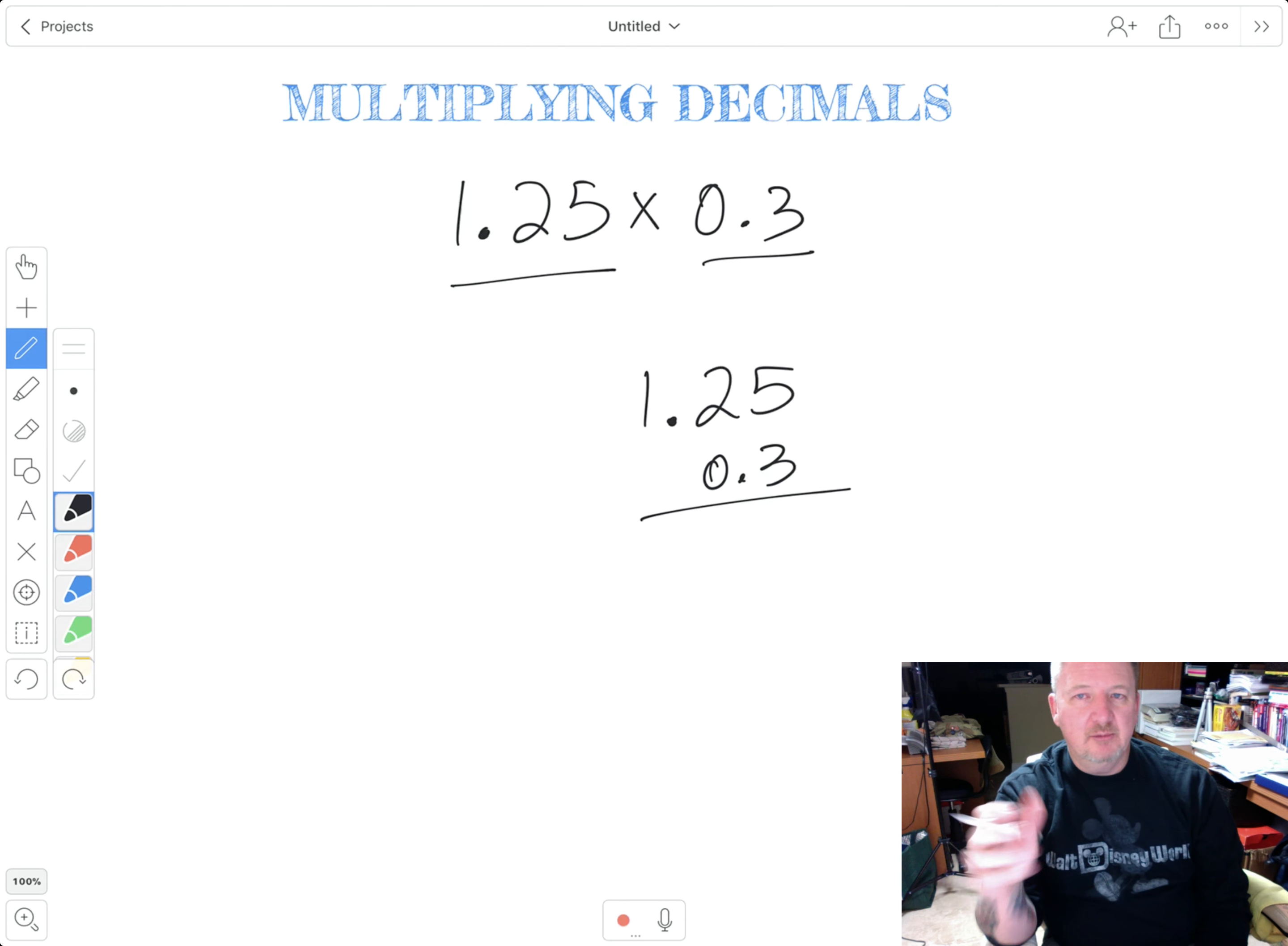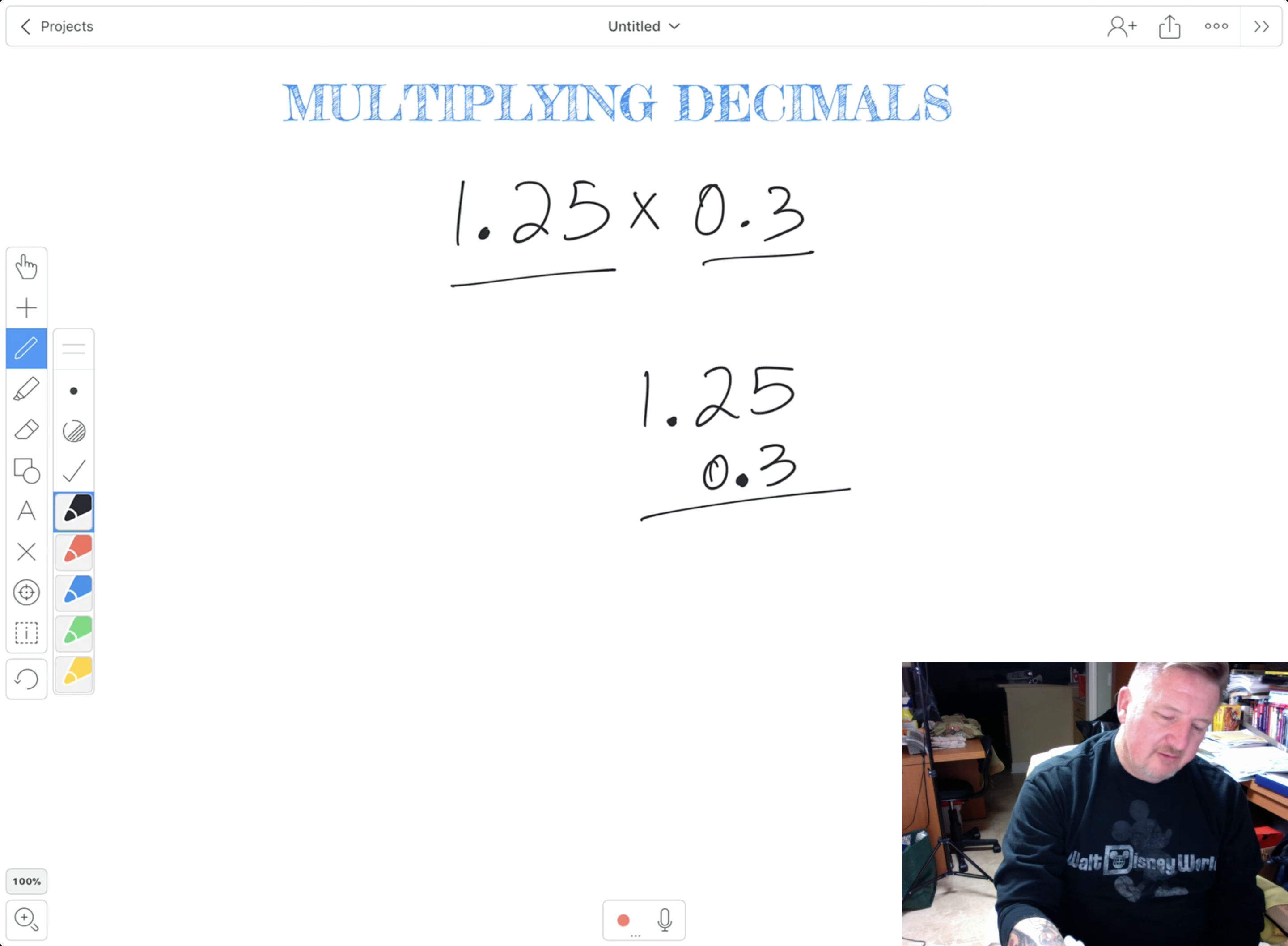When you're multiplying, once again, this is only on multiplying, once you have your numbers written down like this, you don't have to line them up, but you count how many place values the decimal has.